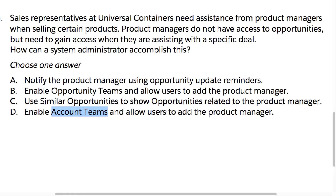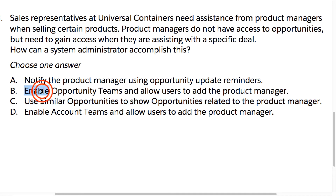We can also rule out C. Using similar opportunities shows other opportunities in the system that are similar, but this will not bring up opportunities related to the product manager, and it won't give the product manager access to those similar opportunities — even if the product manager was part of the opportunity team on those other opportunities.